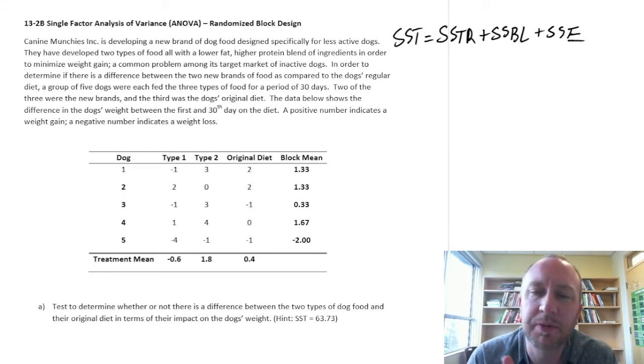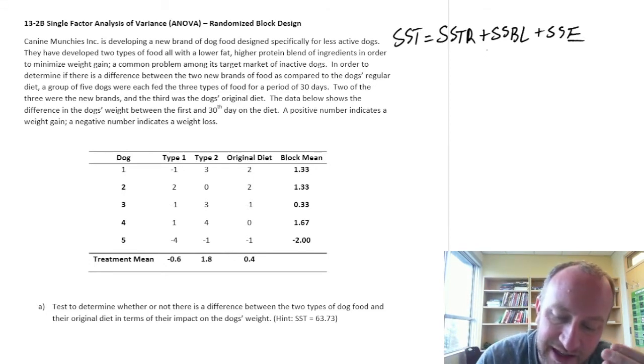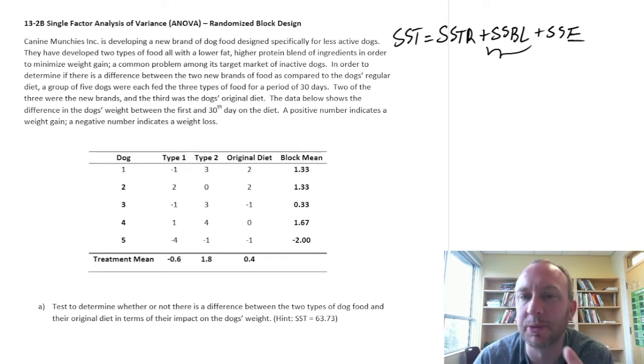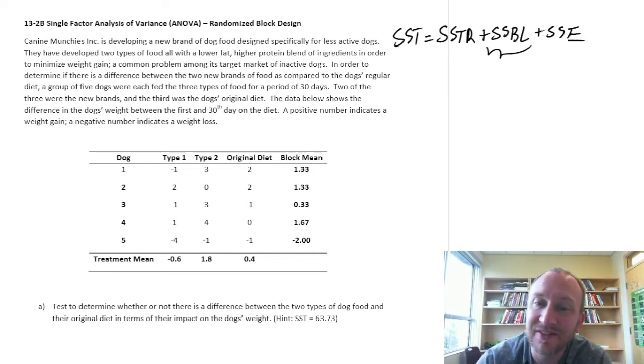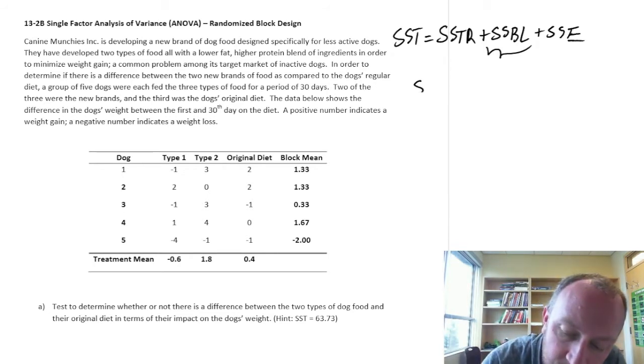So basically what we're doing is we are just accounting for, or we are removing one source of variation, effectively taking it out of the calculation. So, if you recall, in the completely randomized experiments, when we had just SST was a function of the SSTR plus SSE.